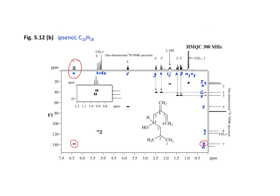Where this becomes really valuable is for the next group, where there are actually four protons that are very close together in chemical shift. B is resolved, but C, D, and E are overlapping. The HMQC reveals that B correlates with carbon D, and it turns out that carbon D is bonded to two protons. That could be demonstrated by a separate DEPT experiment. We see in the HMQC that there is another proton correlating at the same position, which appears to be proton D, overlapping with C and E.